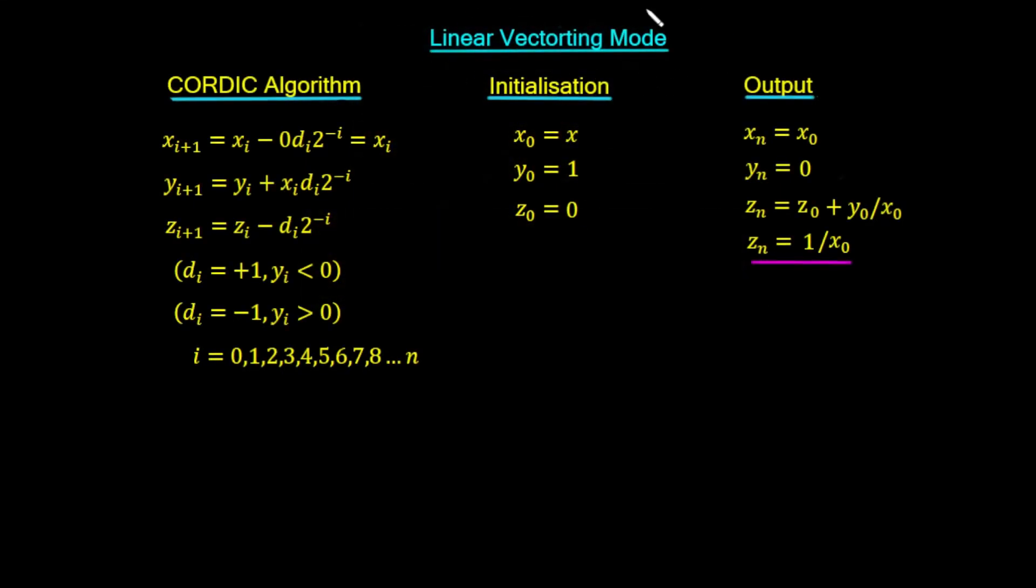So we can use the linear vectoring mode. We have an initialization of x0 is equal to whatever the value is you want to find the reciprocal of, which is the value x. y0 is a value of 1, z0 is equal to 0.